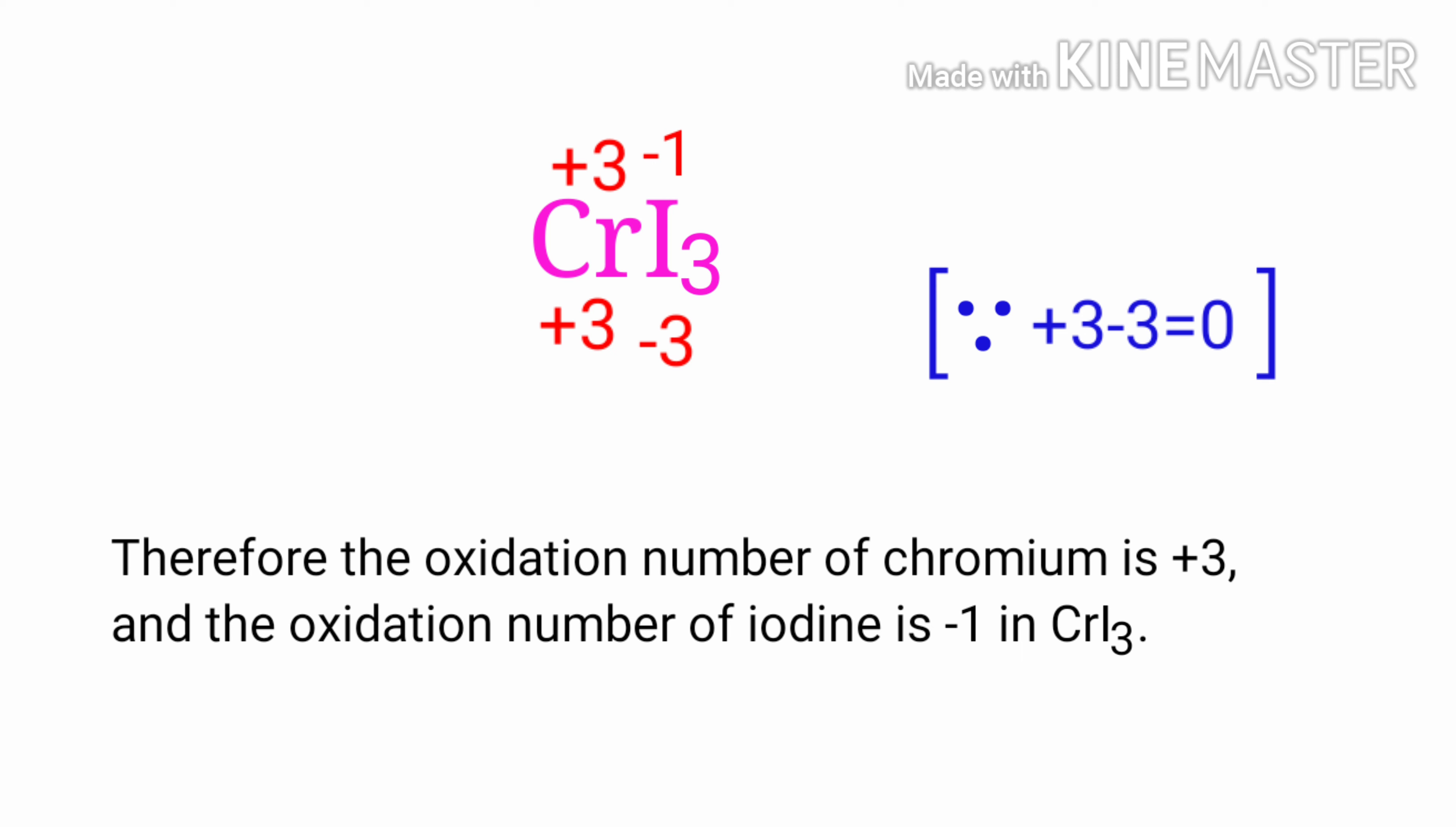Therefore, the oxidation number of chromium is plus three and the oxidation number of iodine is minus one in chromium iodide.